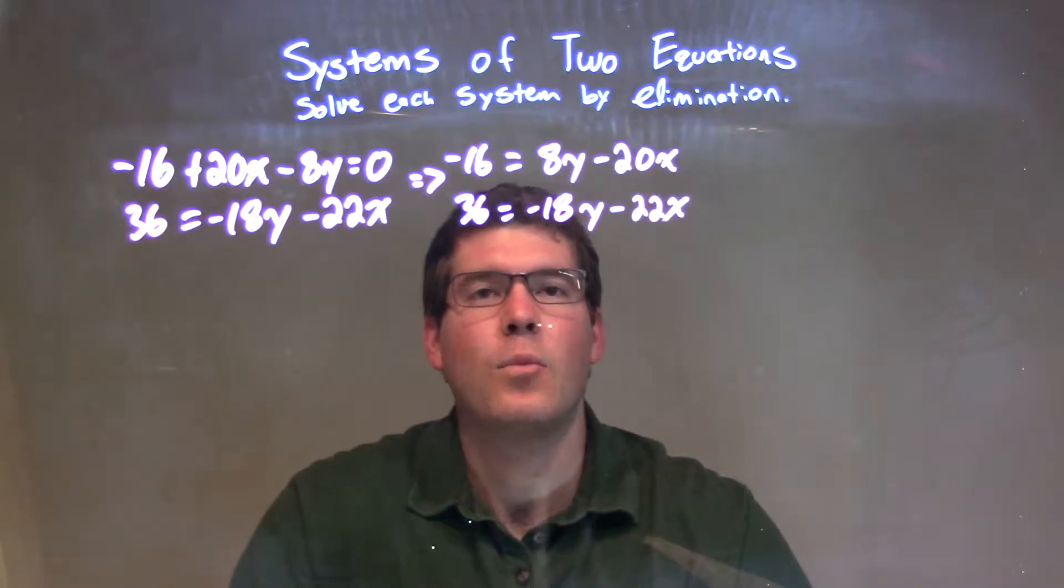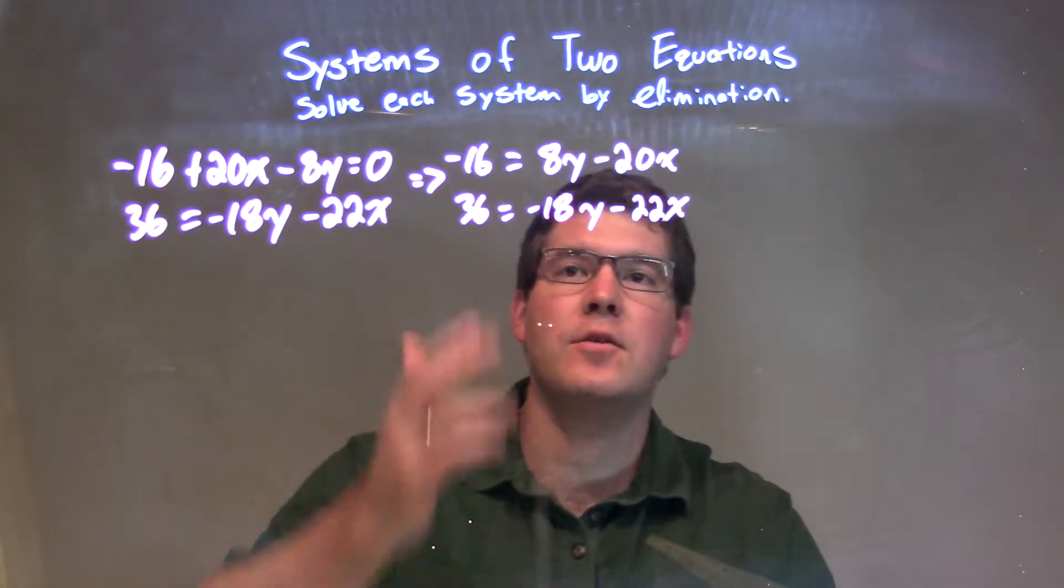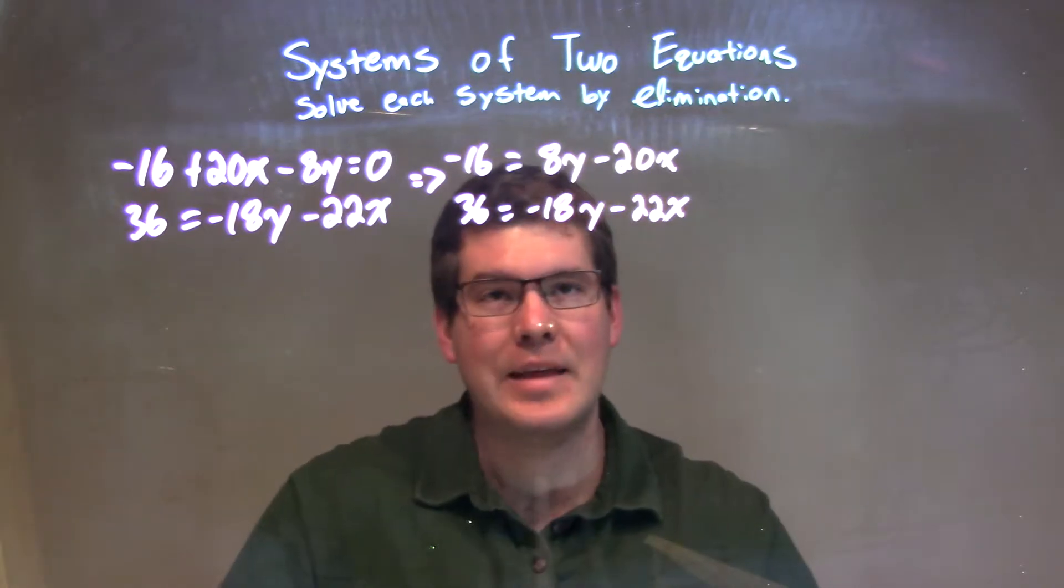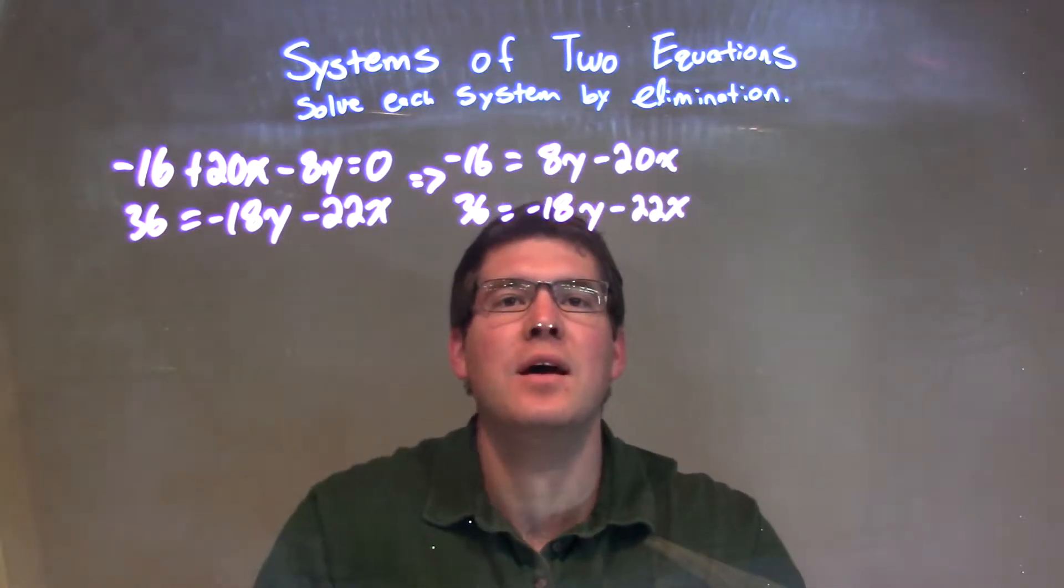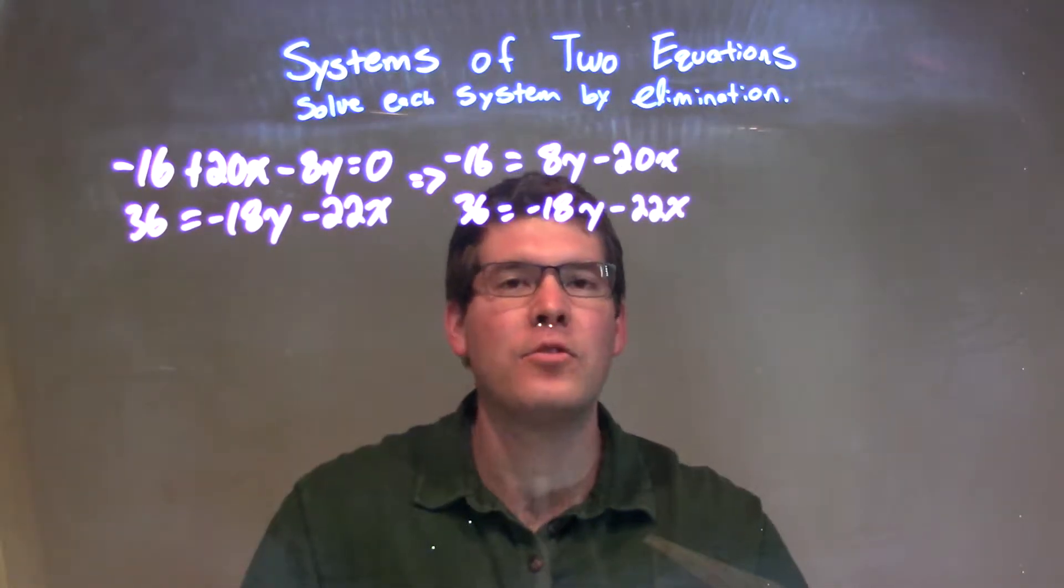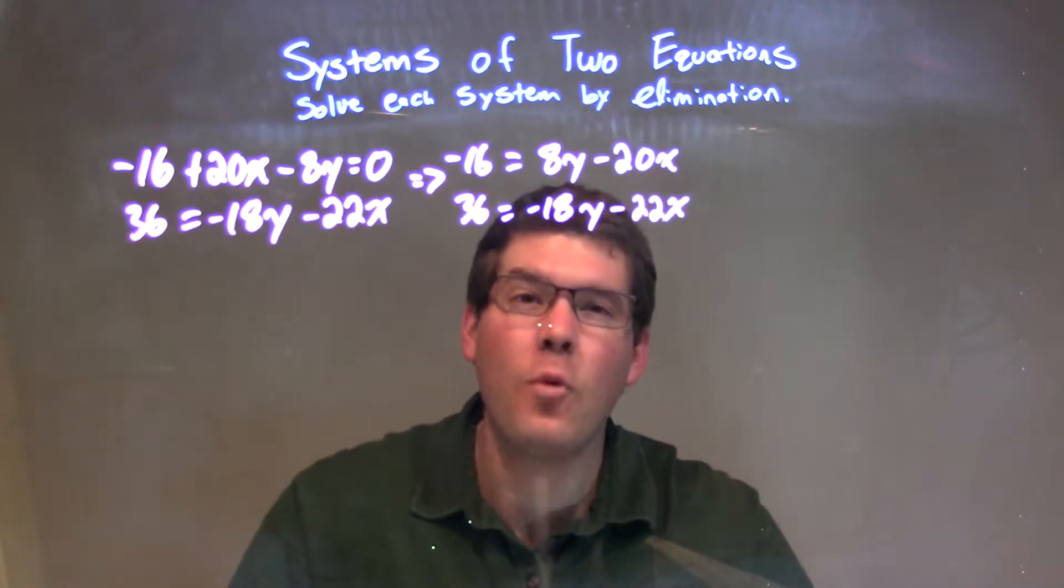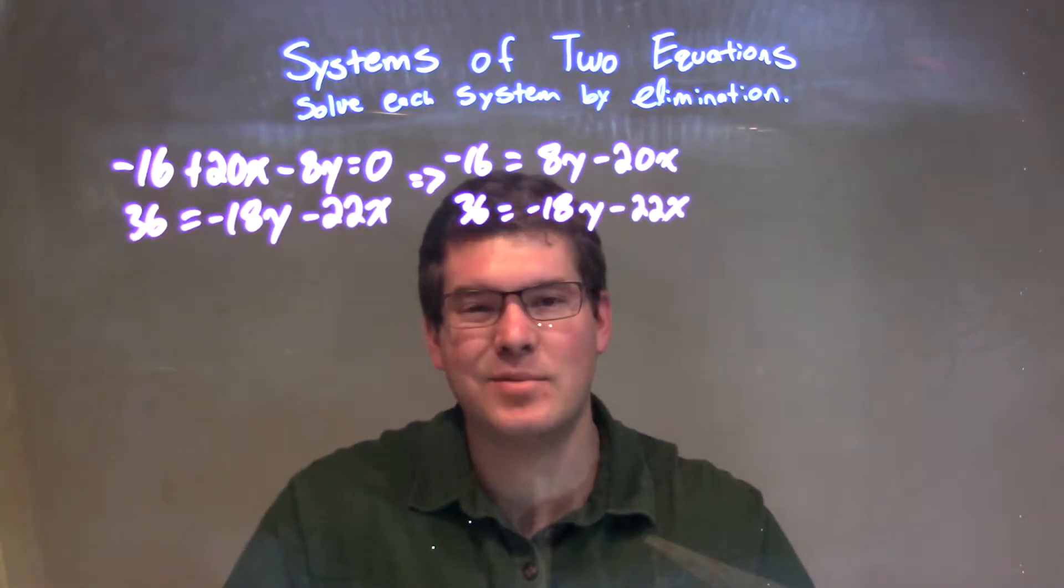This one's going to be tricky. We have our two equations here, and we need to find a way to eliminate one of the variables. I find the easiest one here to be the y's. If I multiply negative 18 times 4, I get 72, and 8 times 9 is 72.